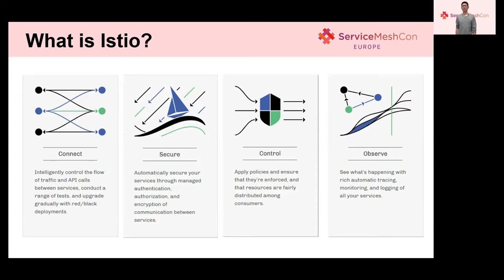Before we start that part, let's introduce Kubernetes and Istio. Kubernetes is a platform for application development and operation, and also provides some capability on service discovery and load balancing. However, Istio is totally service-oriented and is a very good supplement for Kubernetes in service management — it is very friendly to both developers and operators. Istio provides four major functions. The first one is Connect: it intelligently controls the flow of traffic and API calls between services. With it, we can do more advanced traffic management like blue-green deployment, red-black deployment, and canary release.